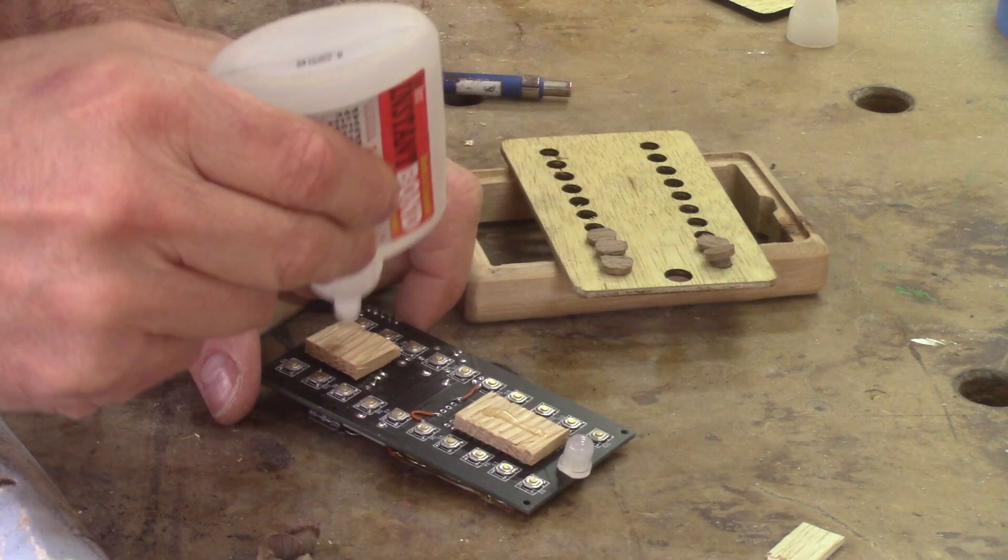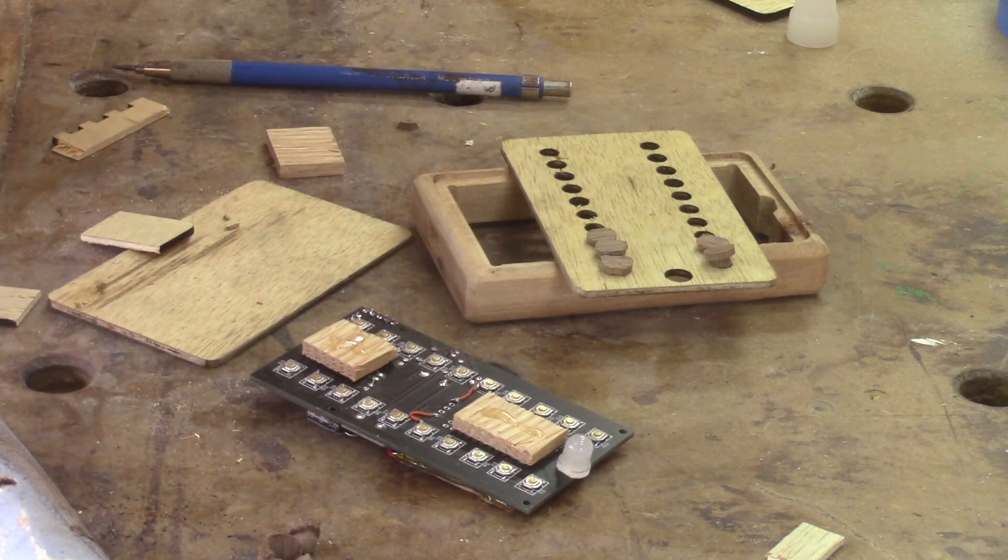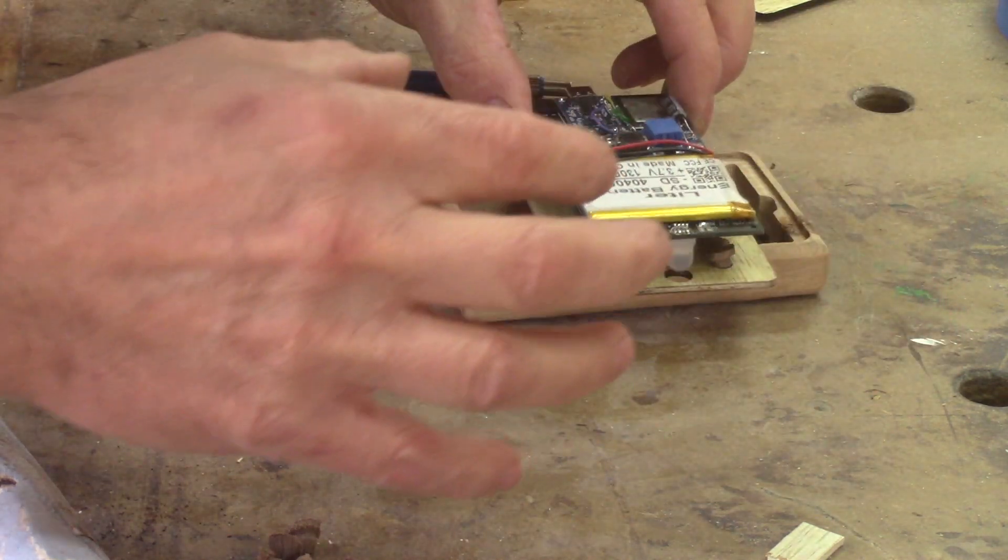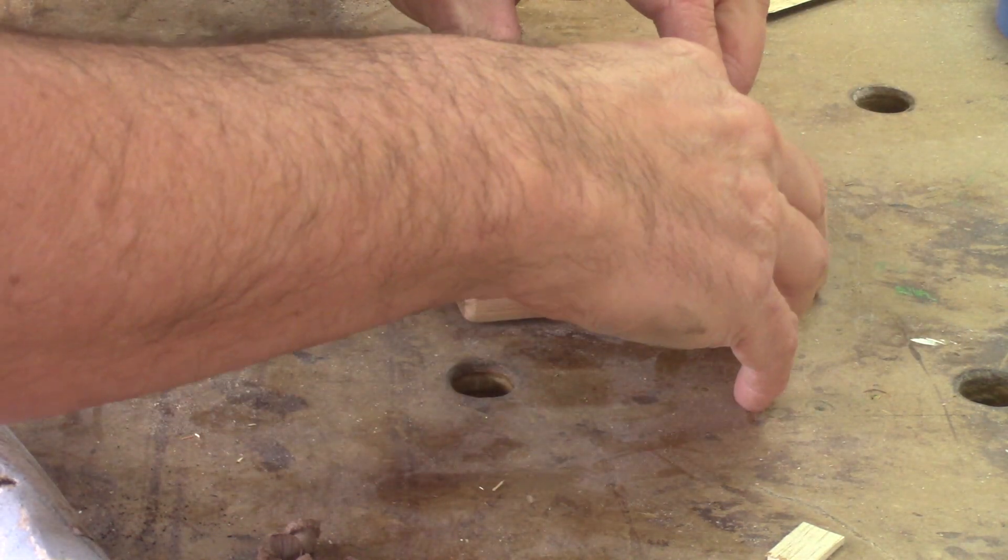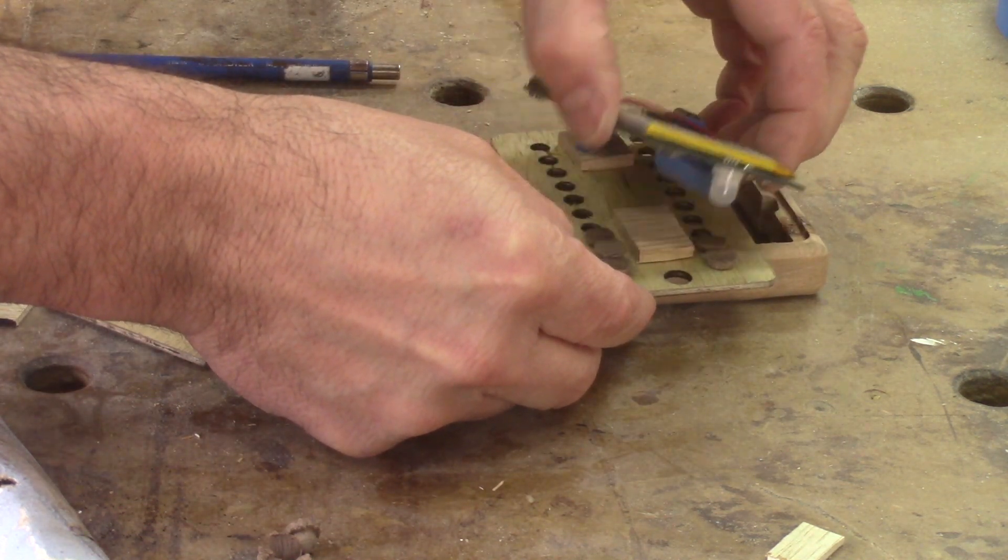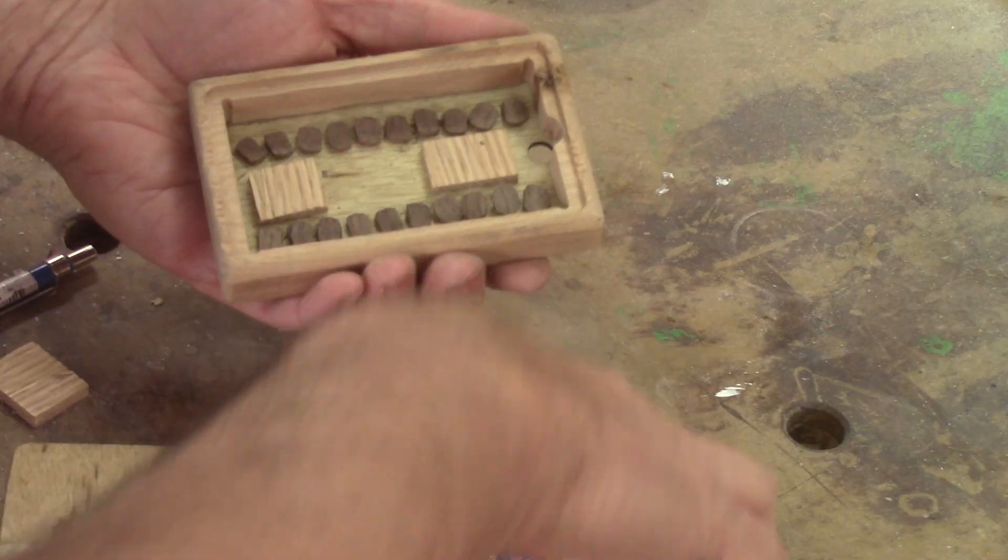I need to glue two spacers between the holes. For this, I use instant glue again. The pieces are held in place on the PCB with blue tape. When the PCB is in place, the spacers are glued. Now, I need to check if this will work. But I can see that the holes are a bit too small.